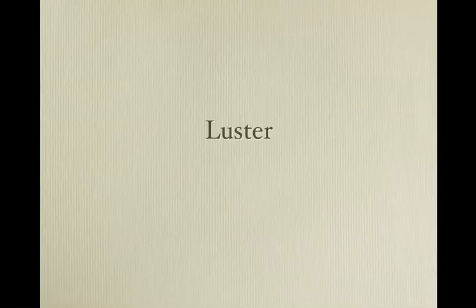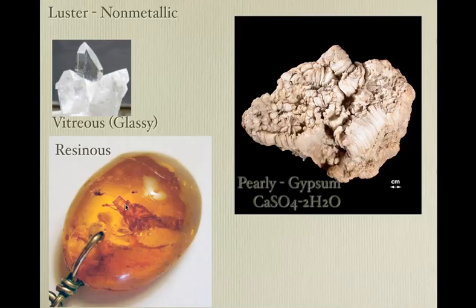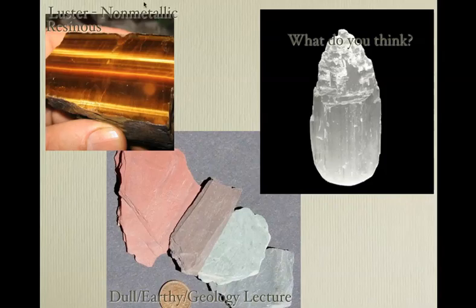If color doesn't work and streak doesn't work, we can look at luster. Luster can be divided into two types: metallic, which looks like a metal — usually gold or silver — or non-metallic. Non-metallic can be glassy (otherwise known as vitreous), rosinous, pearly (looking like a pearl), or dull and earthy — also known as geology lecture.